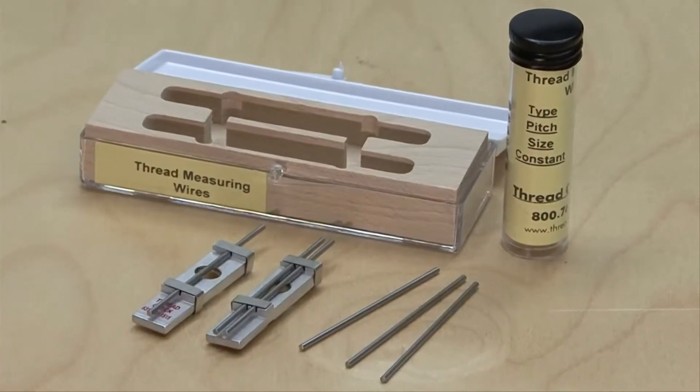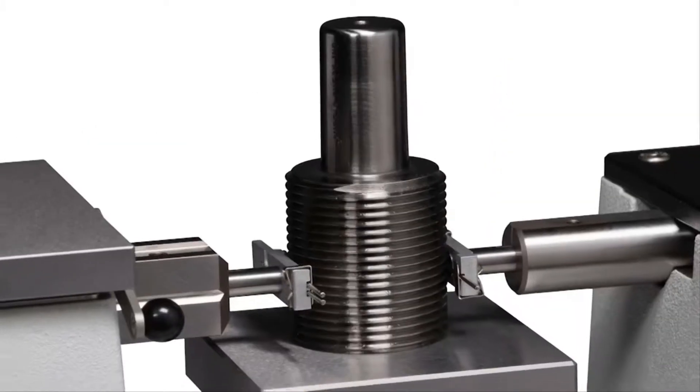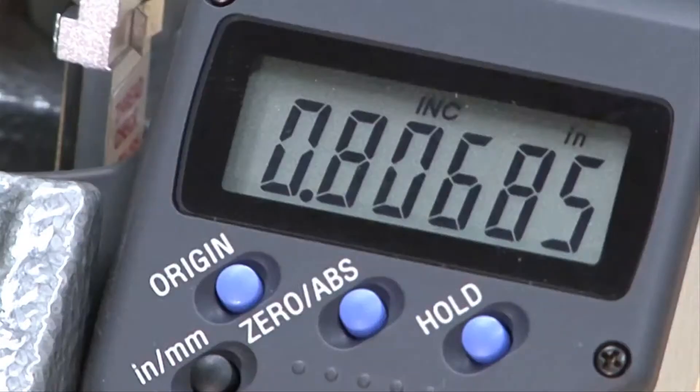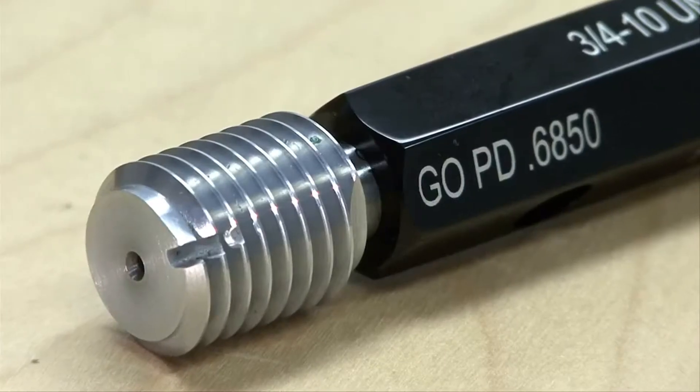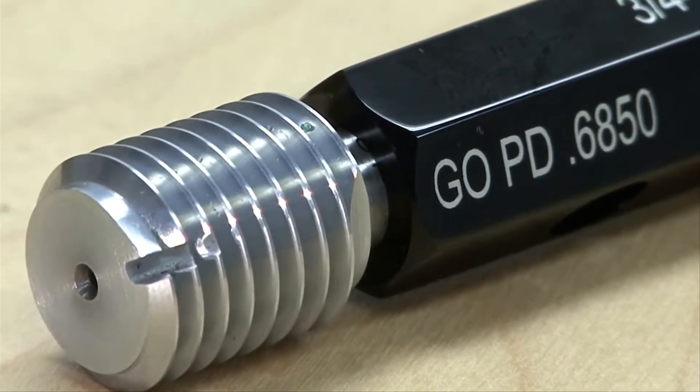Thread measuring wires or a three-wire thread measuring system can accurately measure pitch diameter and confirm the thread plug gauge is still within tolerance. AGD thread plug gauges are designed with a chip groove for sizes above .164.